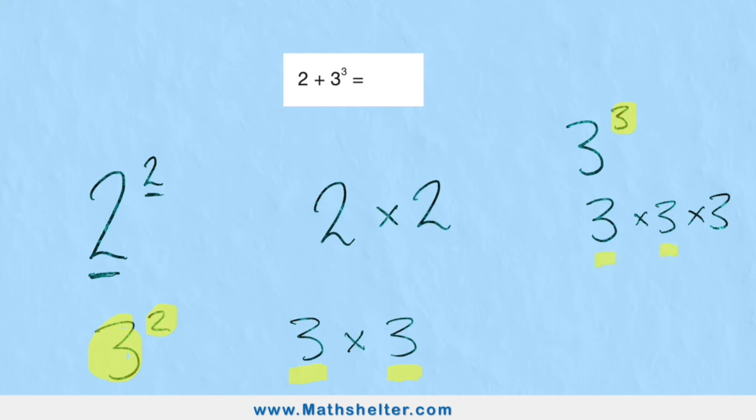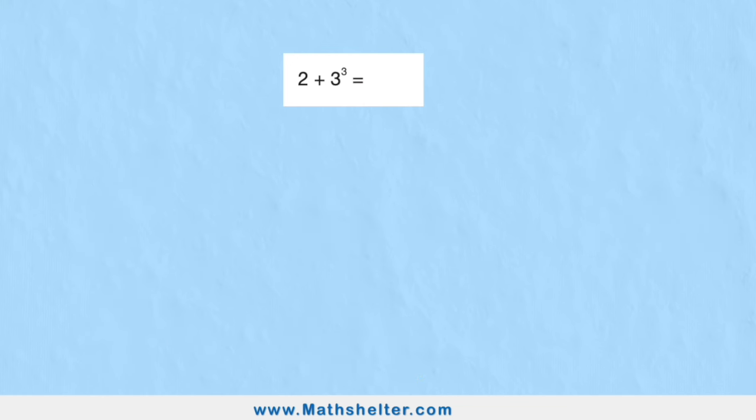In this case, three to the power of three is three times three times three. But at the start we had two plus.